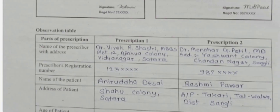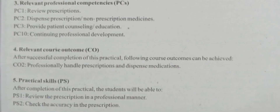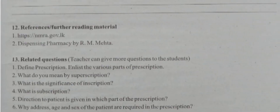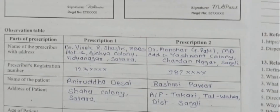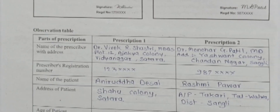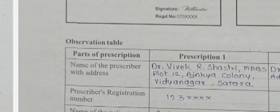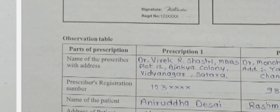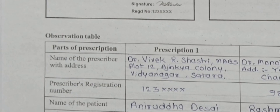There are activities given in your manual regarding the prescription — prescription one and prescription two. From that, you have to write down the observation table. Before that, you should know what is meant by inscription and superscription. The first part covers prescriber's details, then details of the patient.